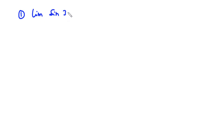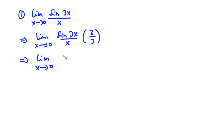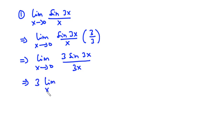For the first example, we find the limit of sine 3x divided by x as x approaches 0. Because we have 3 here, we multiply both the numerator and the denominator by 3. So we have the limit as x approaches 0 of 3 sine 3x divided by 3x. Since 3 is a constant, we transport it behind the limit: 3 times the limit as x approaches 0 of sine 3x divided by 3x.